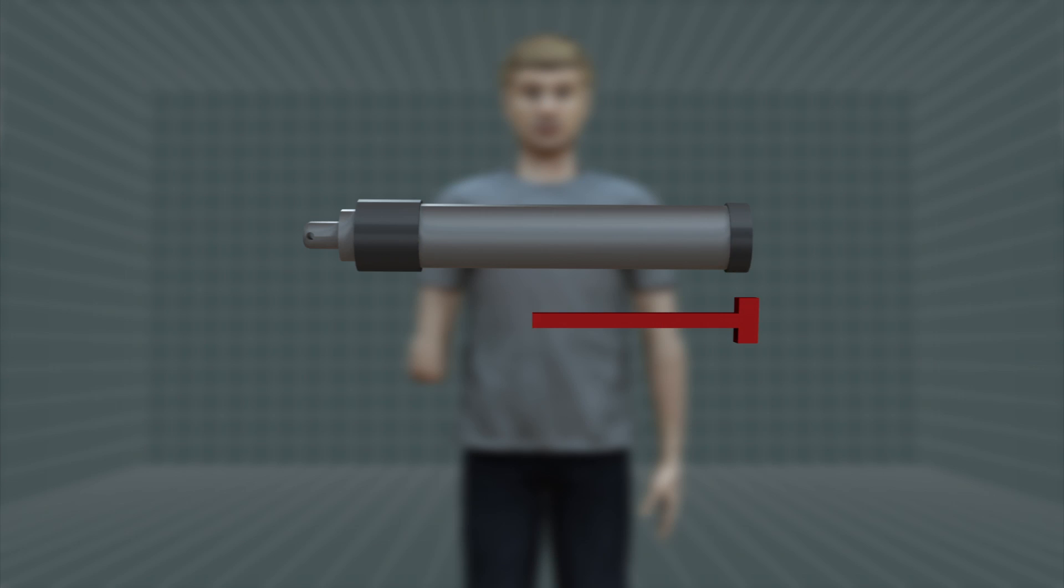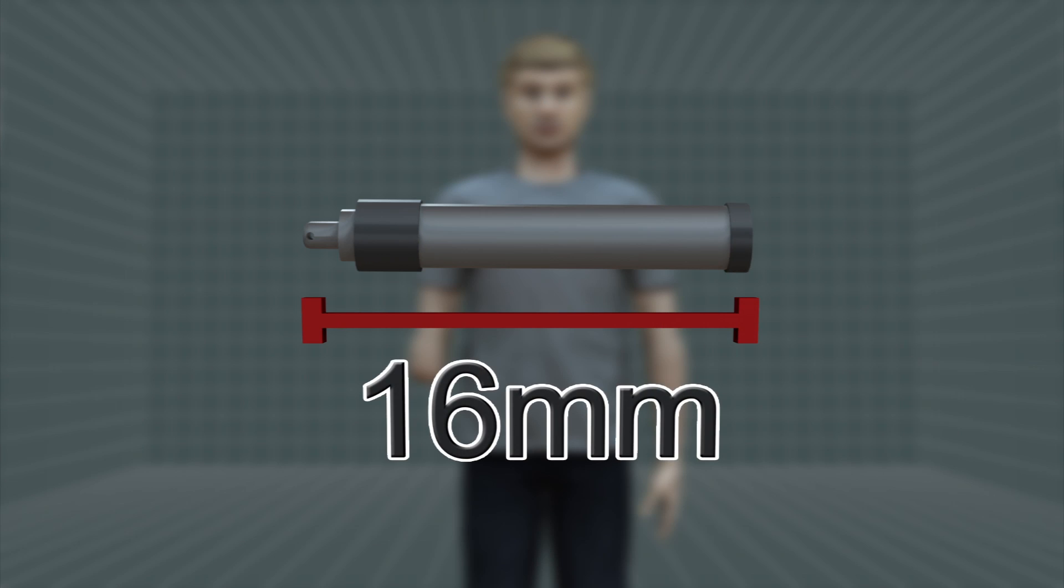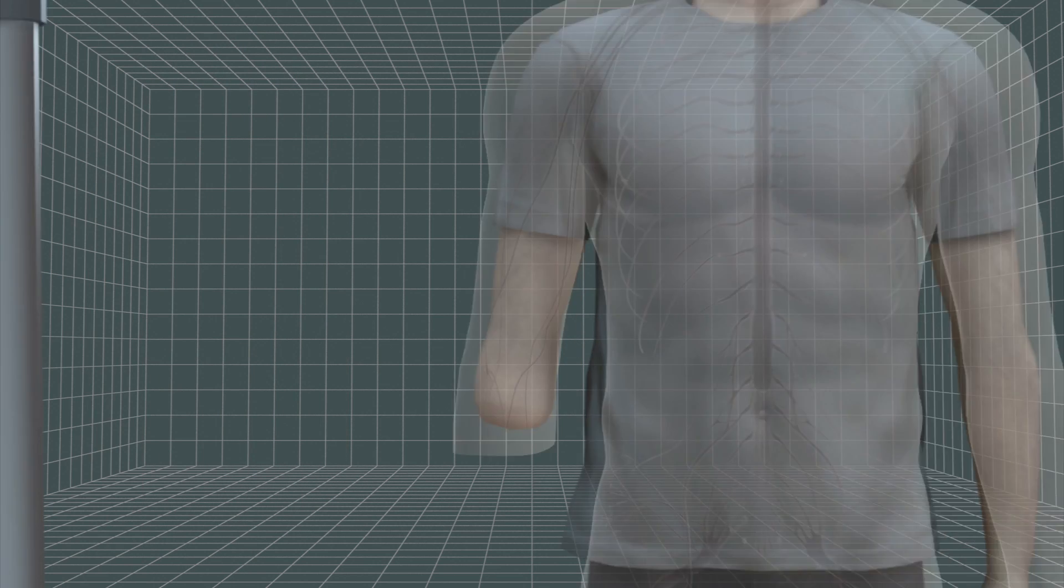Tiny wireless sensors about 16mm long are embedded directly into the residual muscles of the amputee's limb.